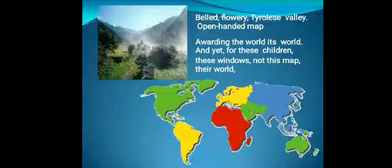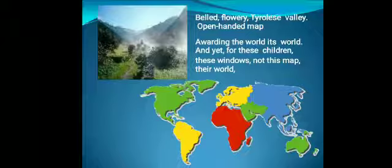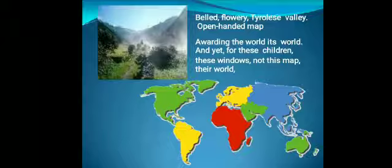Open-handed map — belonging to the aristocrat family or great personalities. Awarding means giving the award. Its world — the world as partitioned by the conquerors. These children in the slum school — not this map — the other world of important, rich, and civilized people is not the world of these children, those who live their life in the slum area.